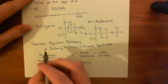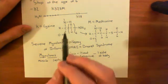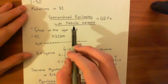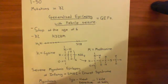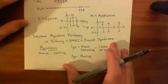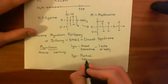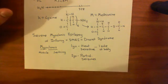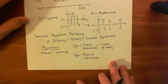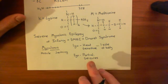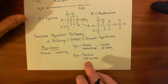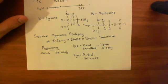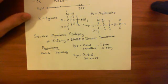The difference between severe myoclonic epilepsy of infancy and generalized epilepsy with febrile seizures is that in generalized epilepsy you get seizures involving all the muscles of the body, whereas in SMEI you get partial seizures. When young, seizures are on one side of the body, but by age two they become partial seizures localized to specific portions of the body — maybe just one arm — whereas in generalized epilepsy the entire body undergoes the seizure.